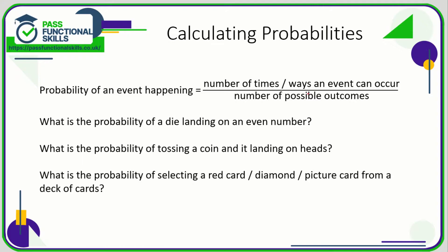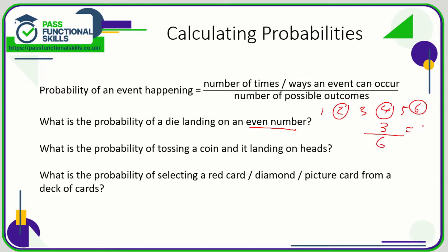This might seem complicated but it's easy in practice. What's the probability of a die landing on an even number? A die can land on one, two, three, four, five, or six, so there are six possible outcomes — that's out of six. How many even numbers are there? It could land on a two, a four, or a six, so that's three even numbers.